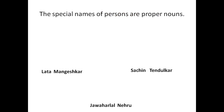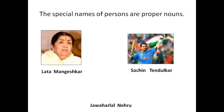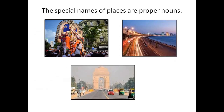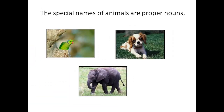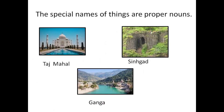Remember that special names of persons are Proper Nouns — for example, Lata Mangeshkar, Sachin Tendulkar, Jawaharlal Nehru. The special names of places like Puri, Mumbai and Delhi are Proper Nouns. The special names of animals and birds — for example, Mitu, Moti and Jumbo — are Proper Nouns. Also, the names of pet animals are Proper Nouns. In this slide, we can see a beautiful monument called Taj Mahal, a fort called Sinhagad, and a river called Ganga. All these names are Proper Nouns.